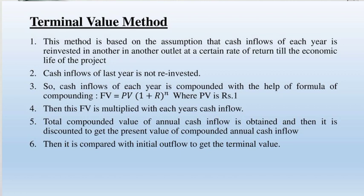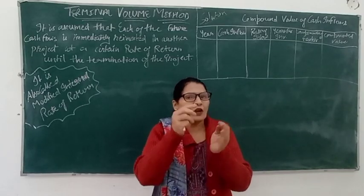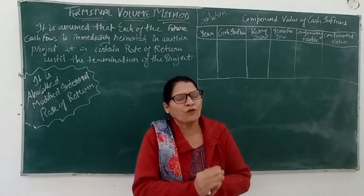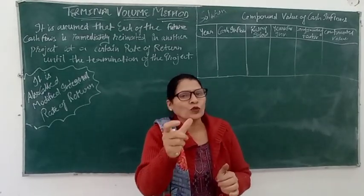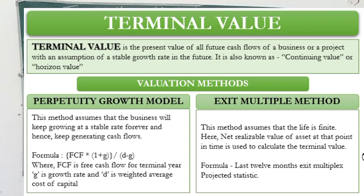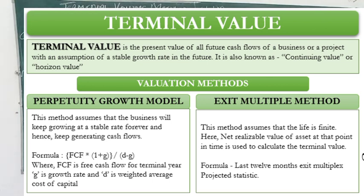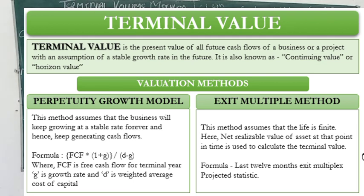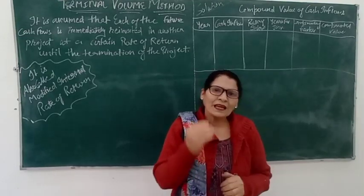If it is a single project, the project is accepted if the present value of all compounded cash inflows is greater than the cash outlay. And if it is a mutually exclusive proposal, then the project with the higher present value of total compounded cash inflows will be accepted. In case of mutually exclusive proposals, the proposal which has the higher present value of all compounded cash inflows is accepted; otherwise it will be rejected.